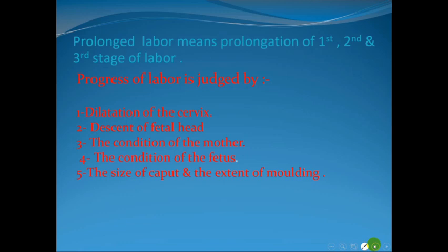The normal progress of labor is judged first by dilatation of the cervix, starting from no dilatation up to full dilatation of 10 centimeters, and second by descent of the fetal head, starting from the floating head — where five-fifths of the fetal head is palpable abdominally — until delivery of the fetal head.